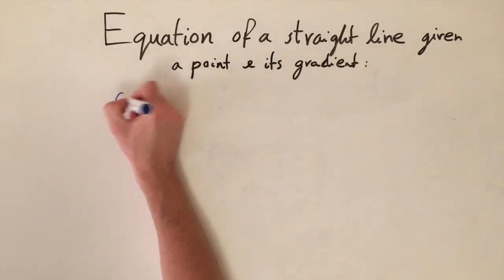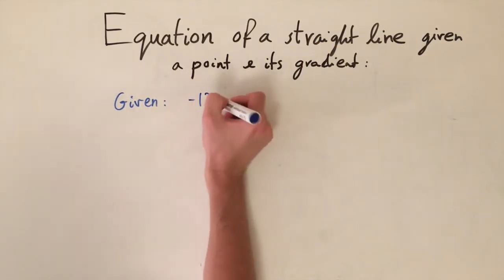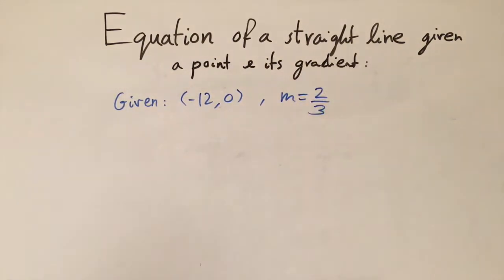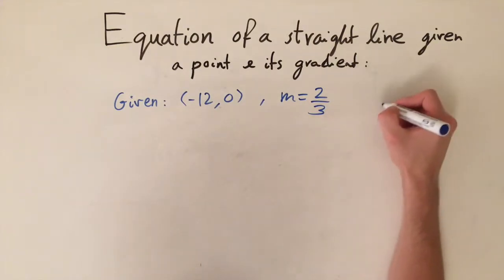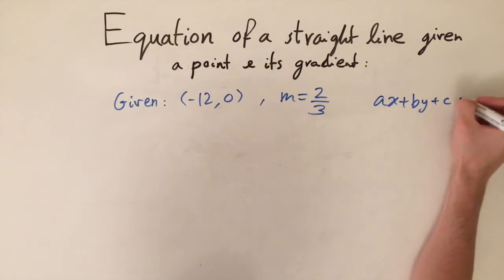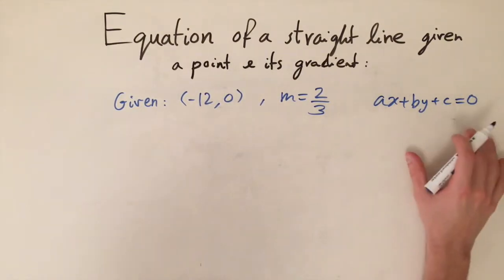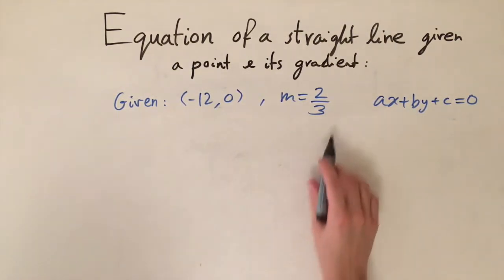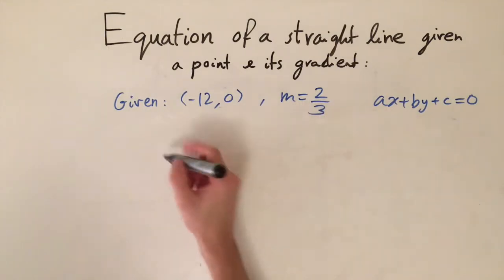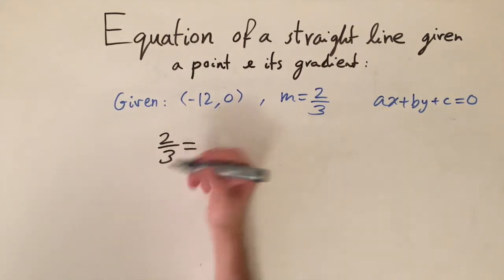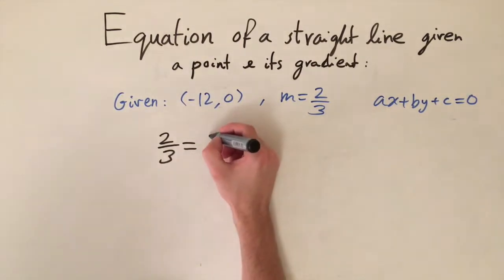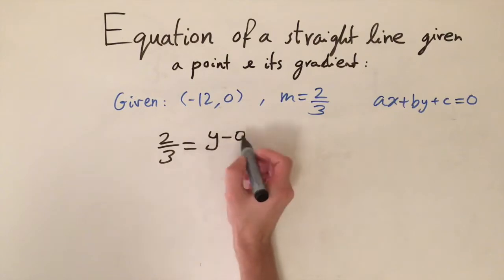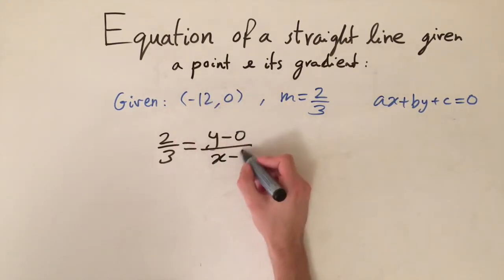For one last problem, we're given the point (-12, 0) and the gradient equals 2/3, so this time it's a fraction. We're asked to find the equation of the line in the form ax plus by plus c equals 0. Using the formula: 2/3 equals the change in y over the change in x, so y minus the y-coordinate (which is 0) on top, divided by x minus the x-coordinate (minus 12), giving y divided by x plus 12.